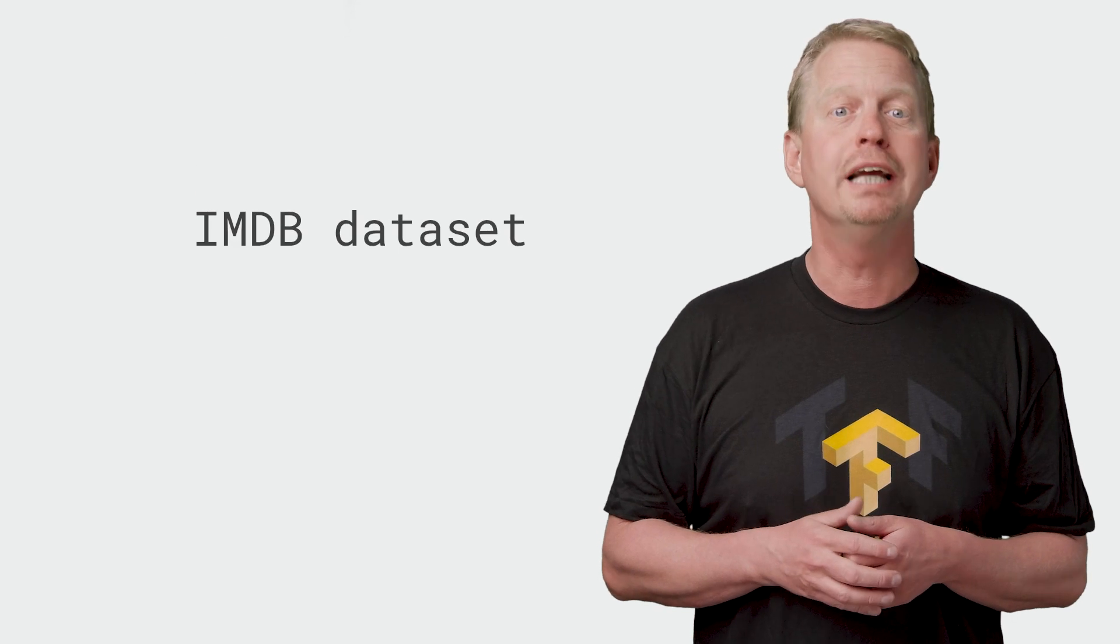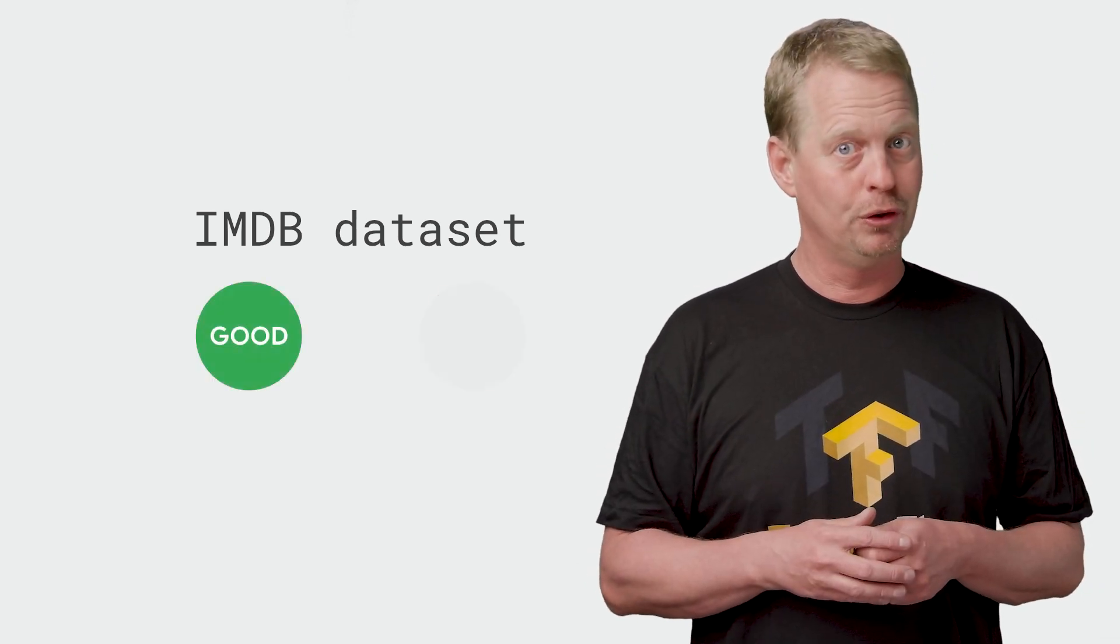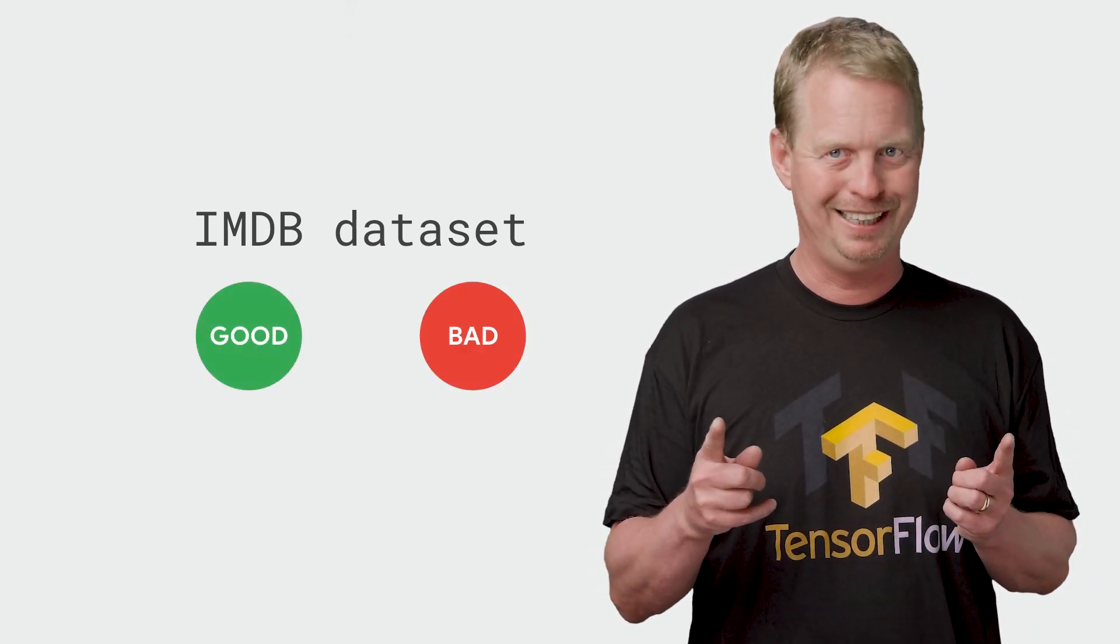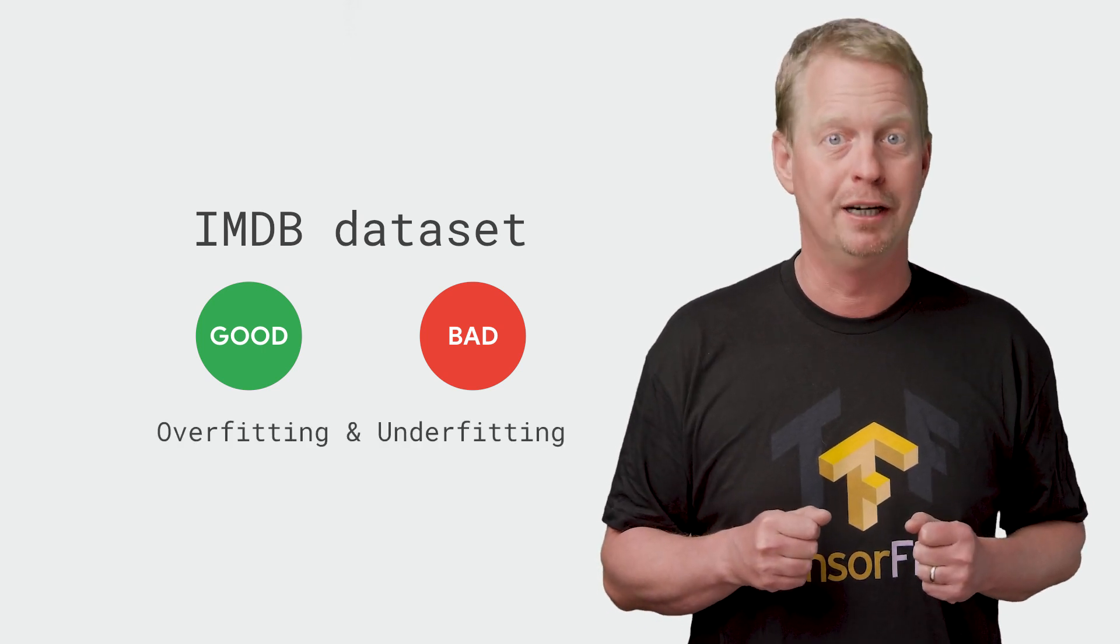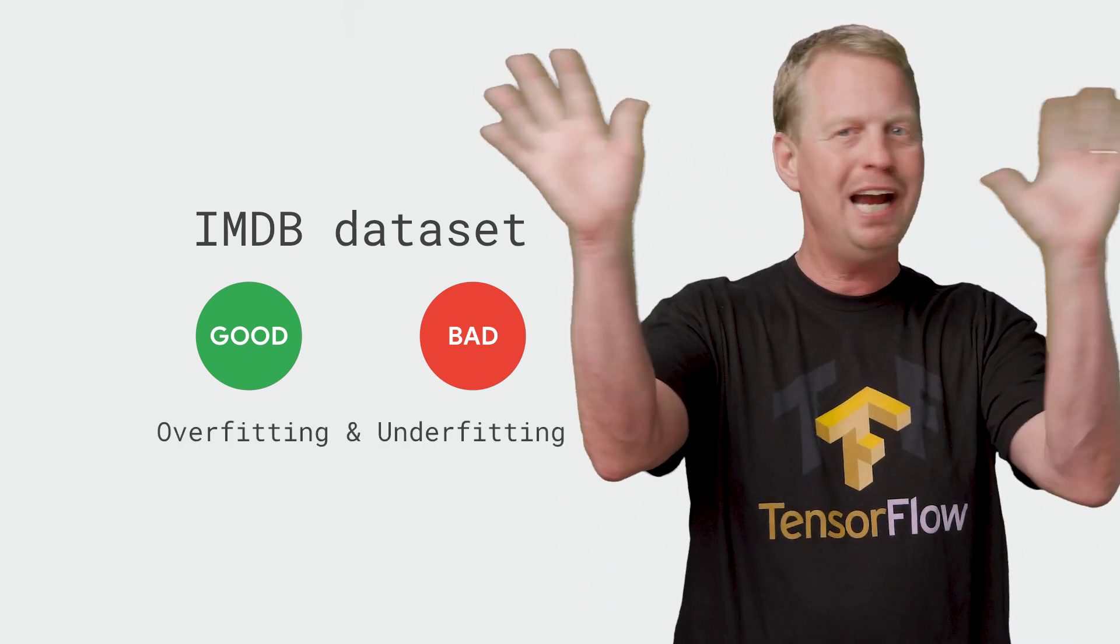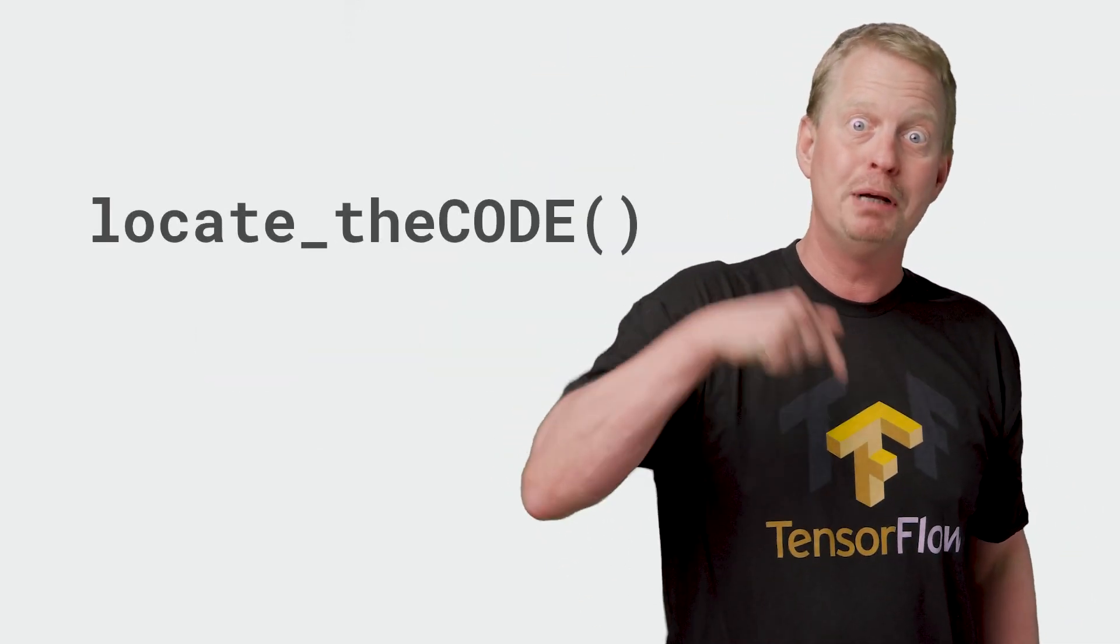In this video, we'll use the IMDb dataset, as we did in the text classification video, to classify if movie reviews are good or bad. But the important stuff in this video is to explore what overfitting and underfitting means. All right, that's enough words. Let's get started executing the code. You'll find it below.